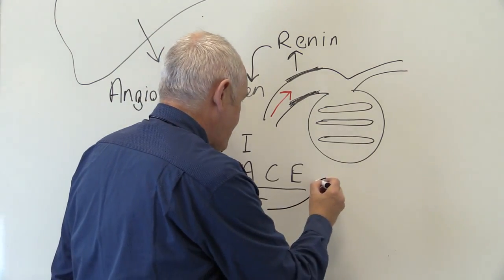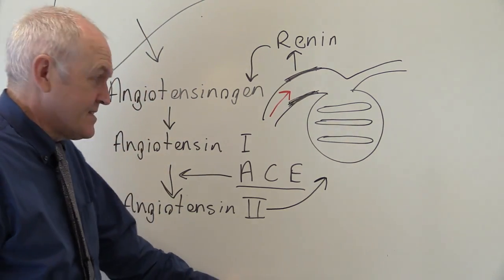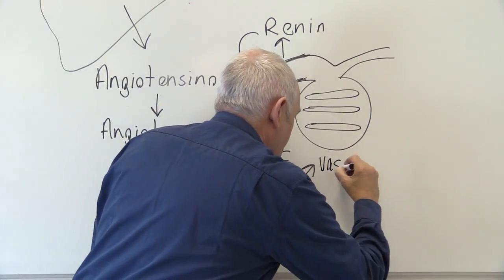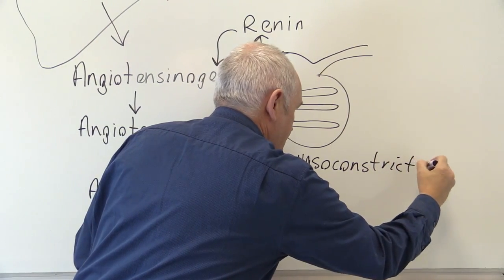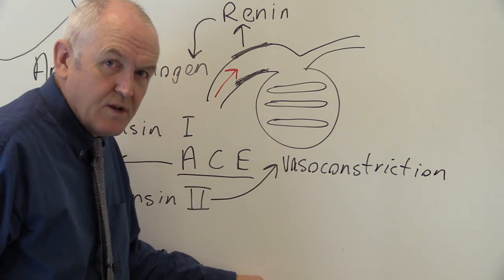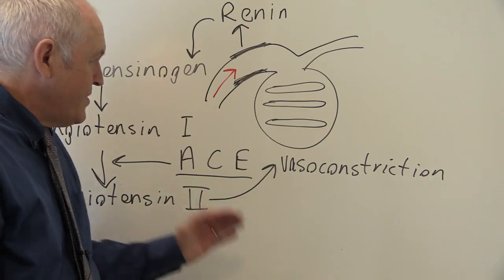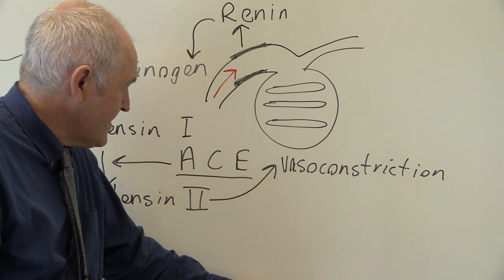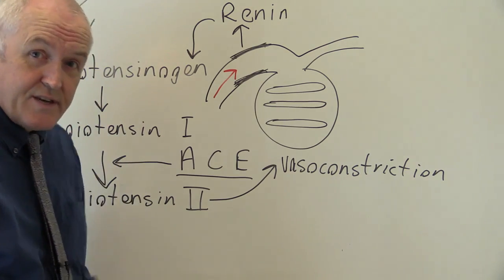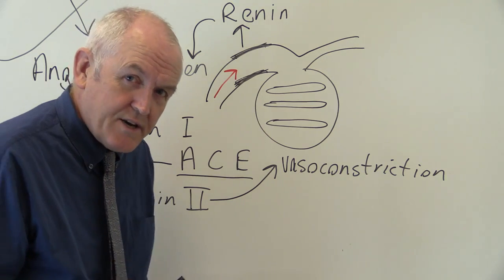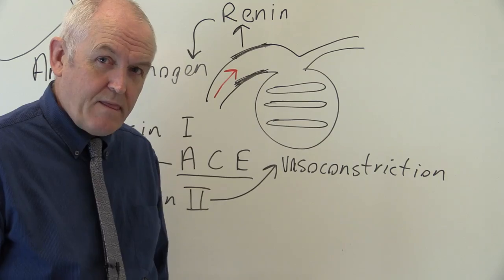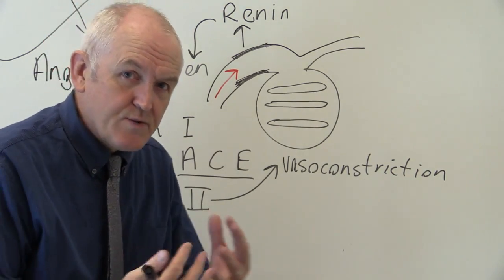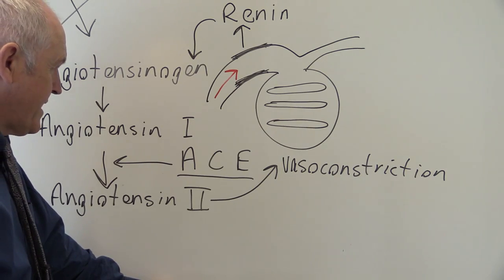Angiotensin type 2 is a smaller peptide of only eight amino acids, produced by the ACE enzyme primarily present in the lungs. Angiotensin type 2 has several effects. Firstly, it is a very potent vasoconstrictor — it vasoconstricts peripheral arterioles. If you constrict the peripheral arterioles you increase peripheral resistance, and since blood pressure equals cardiac output multiplied by peripheral resistance, greater peripheral vasoconstriction increases blood pressure.